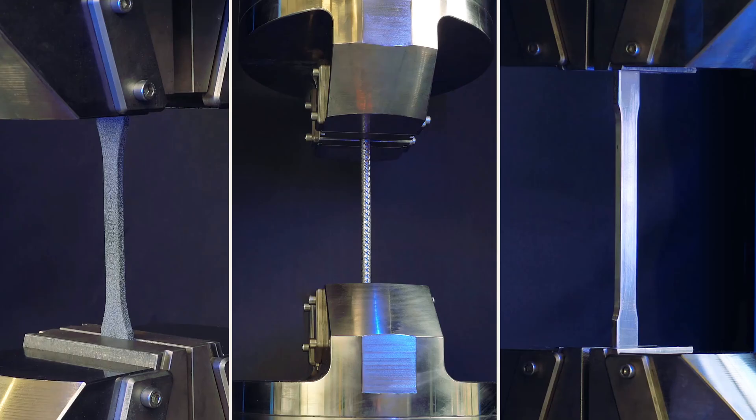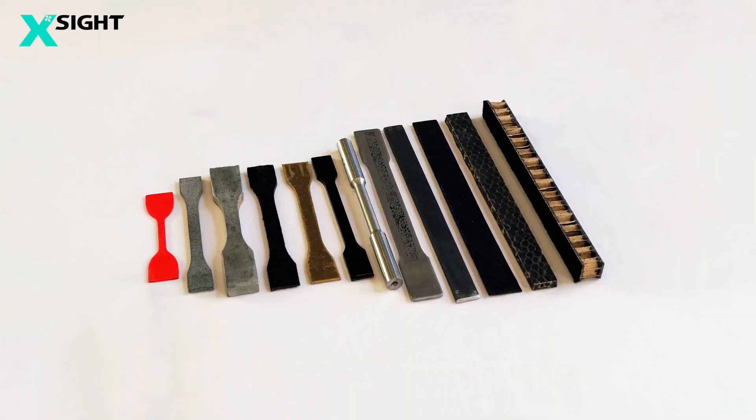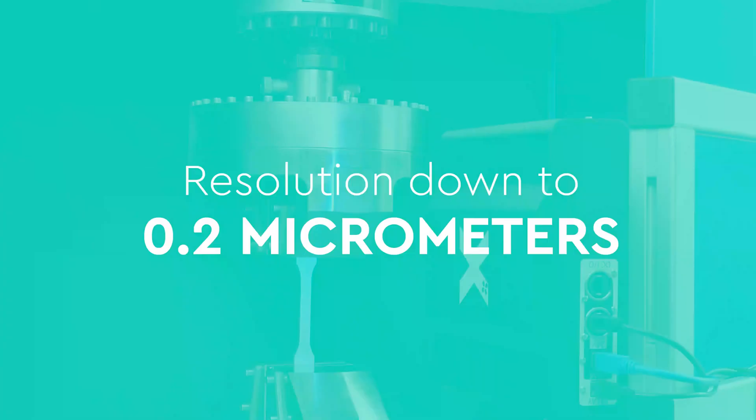2000's versatility has no limits regarding test type and temperature. 2000 can measure metals, plastics, composites, and many others.